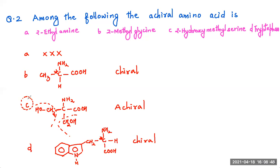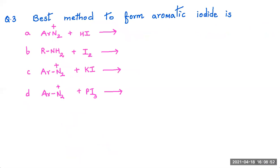We go to the next question. Best method to form aromatic iodide. I think you should know this. We have done it in halogen derivatives of alkanes as well. Very simple. Answer is this. This will give you Ar-I plus N2. Ar-I plus N2 will be evolved.